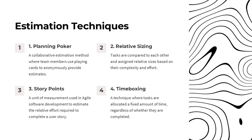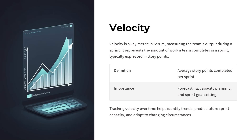Planning poker is a collaborative estimation technique where team members use playing cards to anonymously provide estimates for tasks. Relative sizing involves comparing tasks to each other and assigning relative sizes based on their complexity and effort. Story points are a unit of measurement used in agile software development to estimate the relative effort required to complete a user story. Time boxing is a technique where tasks are allocated a fixed amount of time, regardless of whether they are completed. Velocity is a key metric in Scrum that measures the team's output during a sprint, typically expressed in story points. Velocity is important for forecasting, capacity planning, and setting sprint goals, and tracking it over time helps identify trends, predict future sprint capacity, and adapt to changing circumstances.